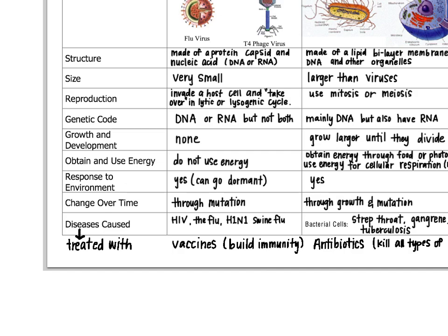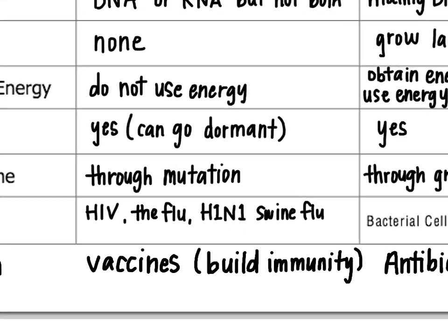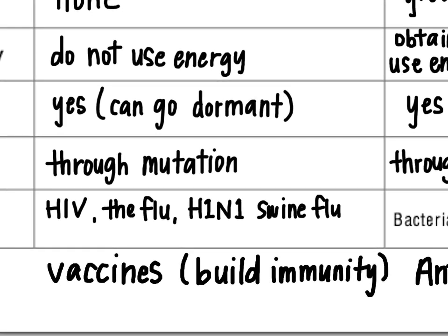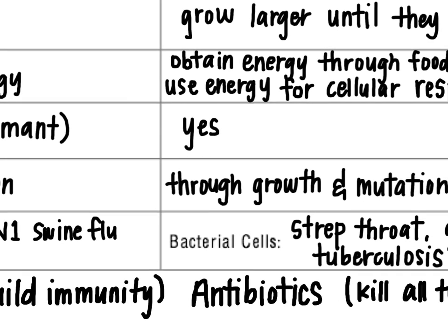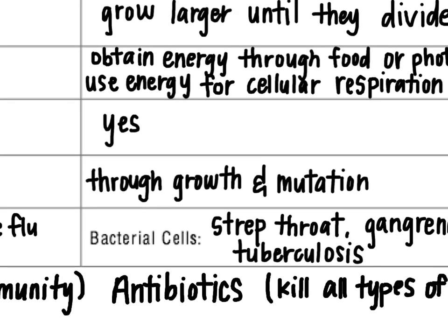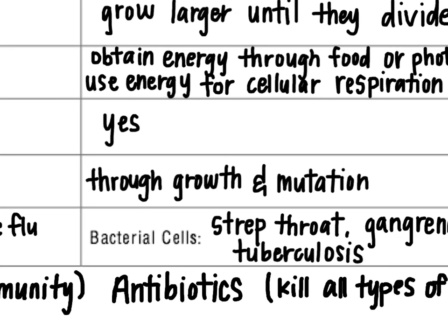As a response to the environment, viruses most people would say don't actually respond to the environment. However, you could say that they do because they can go dormant for a time in unfavorable conditions. Cells definitely do respond to their environment in a lot of different ways, depending on the concentration of fluids outside and inside of the cell — they're going to try to compensate for their conditions so that they can survive.